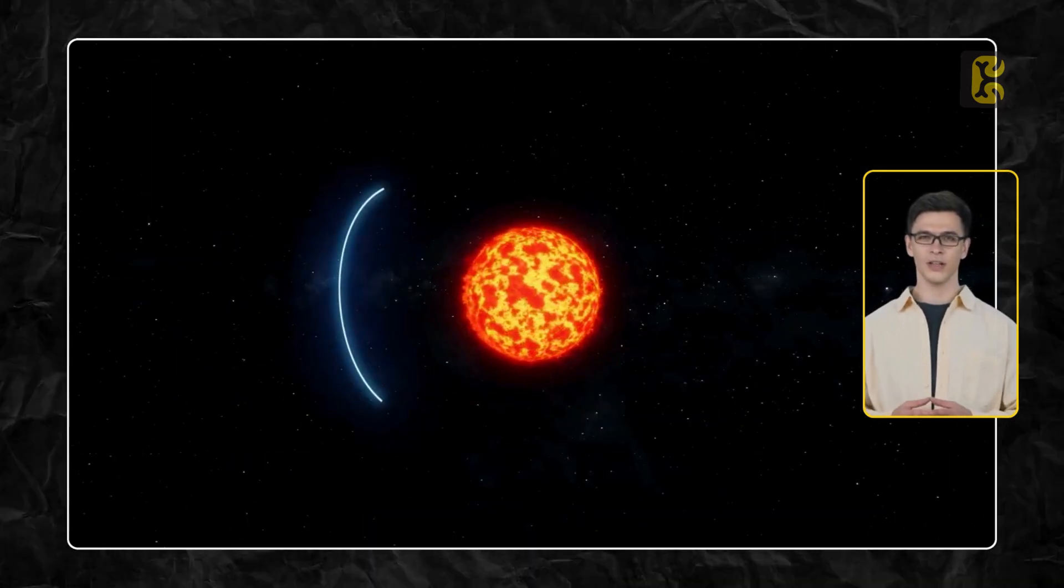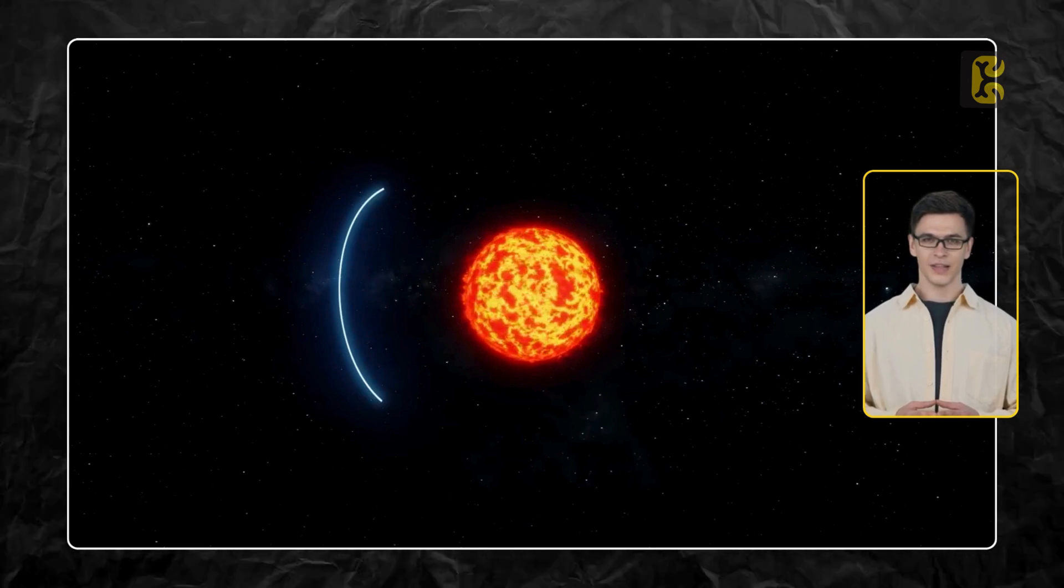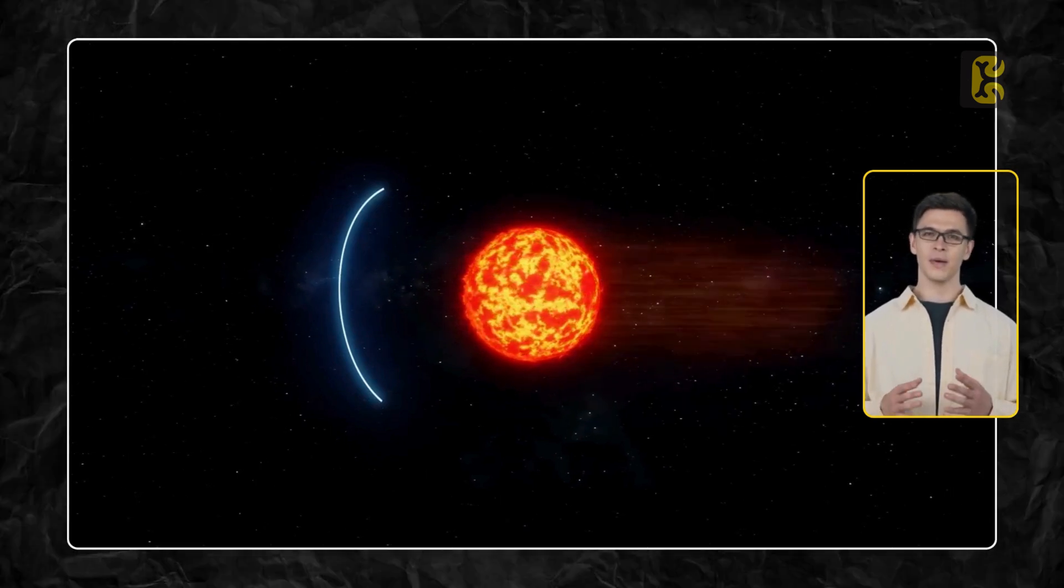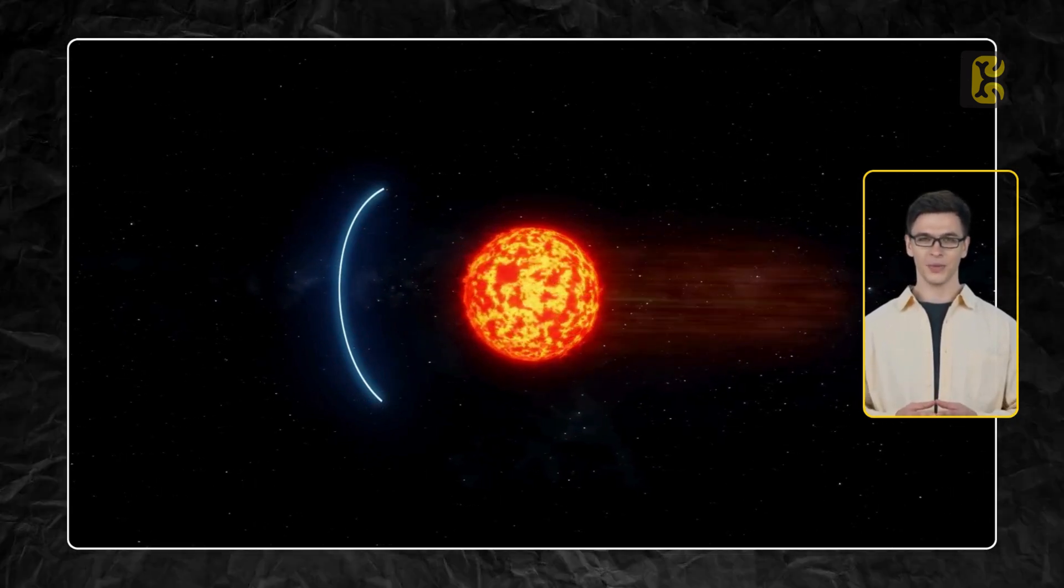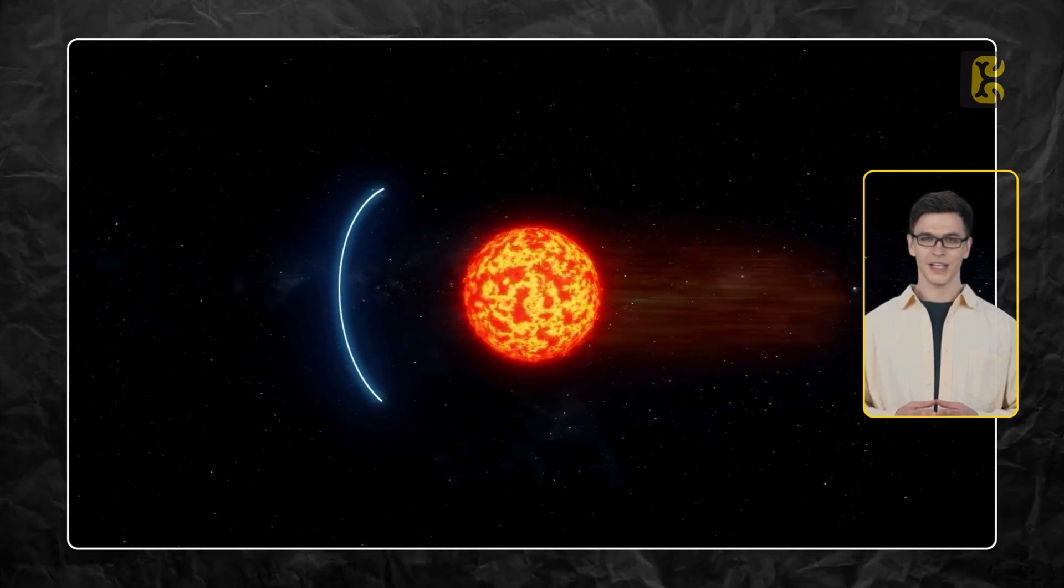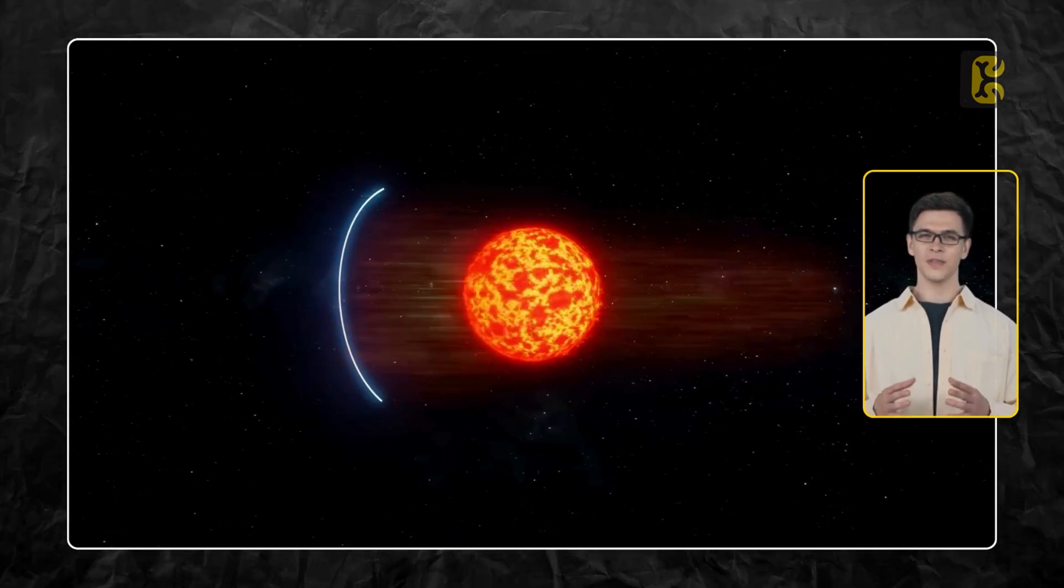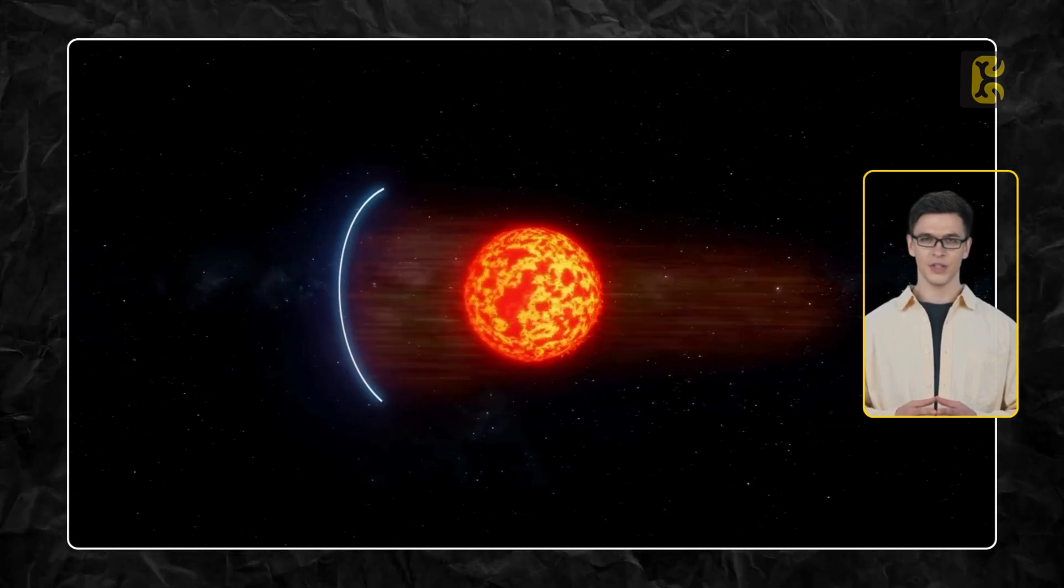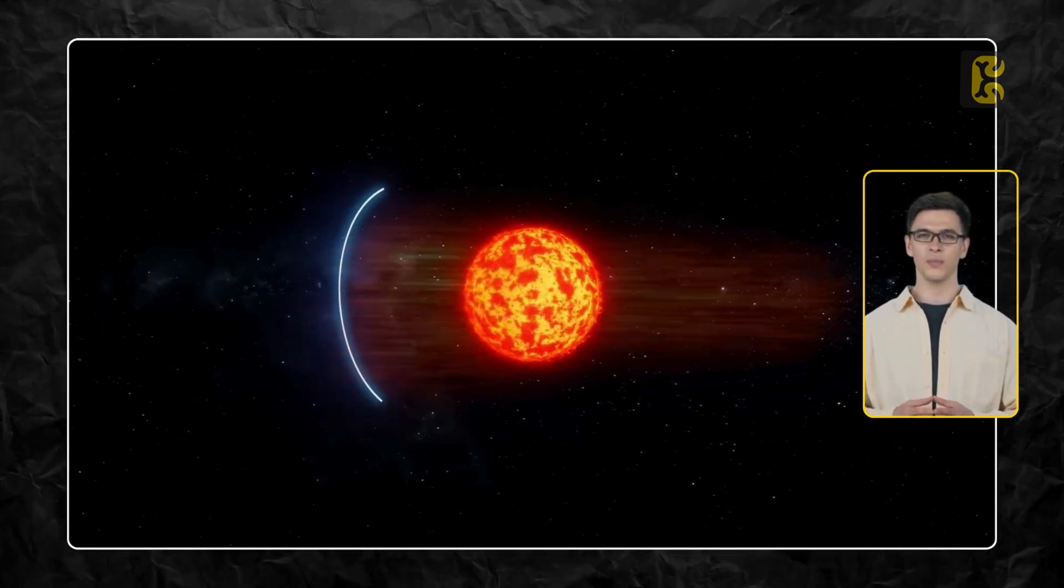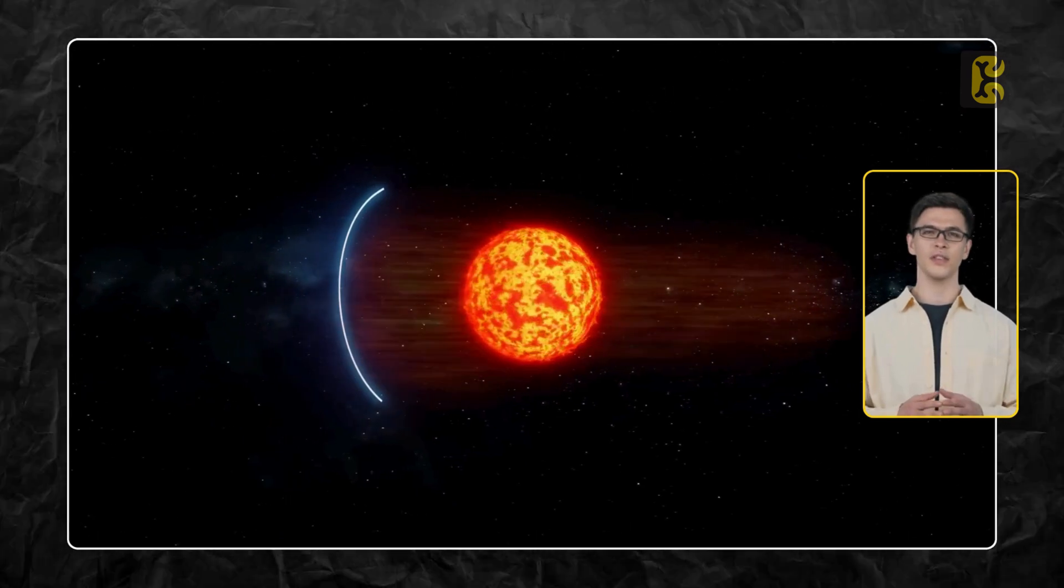Now, suppose this hemispherical mirror is installed on the left side of the Sun. The solar rays emitted from the right side of the Sun would push it to the right. At the same time, when the reflected sunlight from the mirrors hits the left side of the Sun again, due to the conservation of momentum, it would provide additional net thrust to move it to the right.